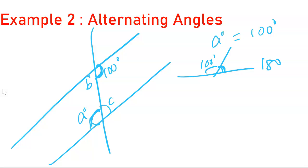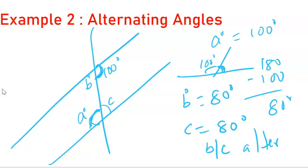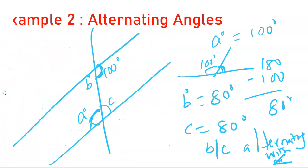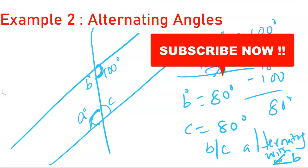is 180 minus 100, therefore angle B is 80 degrees. What about angle C? Angle C is also 80 degrees because it's alternating to angle B. I hope this was helpful, I will stop it there for today. Please do not forget to subscribe. Until then, happy learning.